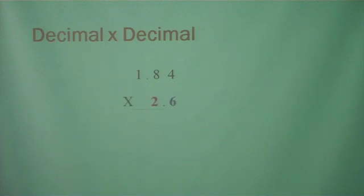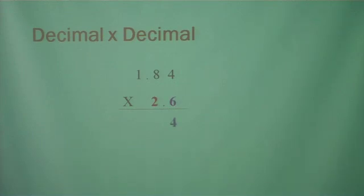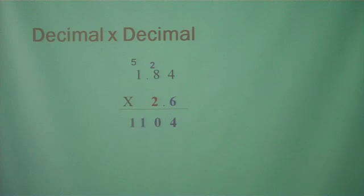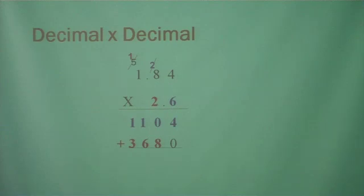The final one is to multiply a decimal times a decimal. Notice the decimals are not lined up — we lined up the numbers and did not worry about the decimals; we'll take care of those at the end. We're going to multiply normally as if we're multiplying 184 times 26. 6 times 4 is 24 — put down your 4, carry your 2. 6 times 8 is 48 plus 2 is 50 — put down your 0, carry your 5. 6 times 1 is 6 plus 5 is 11. Sweep your carries. Put down your place marker and multiply by the 2: 2 times 4 is 8. 2 times 8 is 16 — put down your 6, carry your 1. 2 times 1 is 2 plus 1 is 3. So far it's just like regular multiplication.